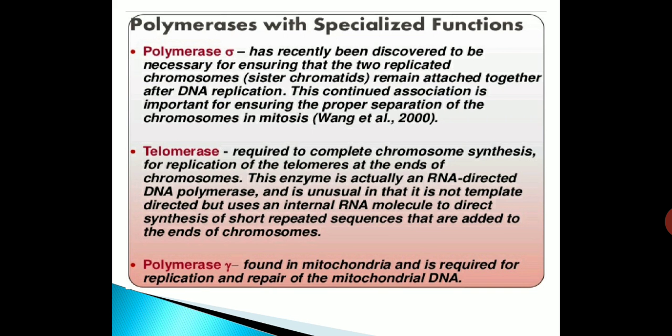Polymerase sigma has recently been discovered to be necessary for ensuring that two replicated chromosomes — sister chromatids — remain attached together after DNA replication. This continued association is important for ensuring the proper separation of chromosomes in mitosis. Telomerase is required to complete chromosome synthesis for replication of the telomeres at the ends of chromosomes. This enzyme is an RNA-directed DNA polymerase, unusual in that it uses an internal RNA molecule to direct synthesis of short repeated sequences added to the ends of chromosomes. Polymerase gamma is found in mitochondria and is required for replication and repair of mitochondrial DNA.